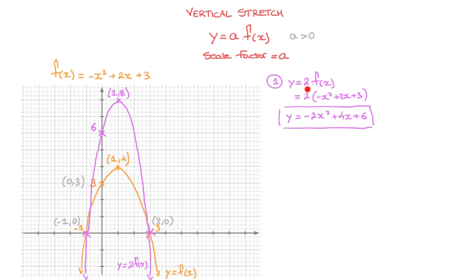In this first example, the scale factor was greater than 1. For the second example, let's see what happens when we use a scale factor between 0 and 1. Consider the transformation y equals one over four times f of x. In this case, the scale factor is one over four, or one quarter, which could also be written as 0.25. To obtain this new curve, we use the same method — multiply all the y-coordinates of f of x by the scale factor one over four. Both x-intercepts have a y-coordinate of zero, so multiplying by one over four won't change them. X-intercepts won't be affected by vertical stretches.